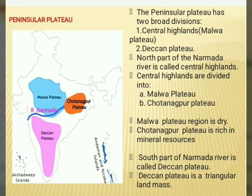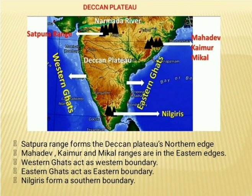Chota Nagpur Plateau is rich in mineral resources; hence, it is called the Ruhr of India. The south part of the Narmada River is called Deccan Plateau. Deccan Plateau is a triangular landmass. While Satpura range forms its northern edge, Mahadev, Kaimur and Maikal ranges are on the eastern edges. Western Ghats act as the western boundary, Eastern Ghats as the eastern boundary, and Nilgiris form the southern boundary.